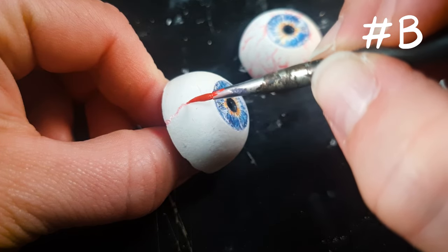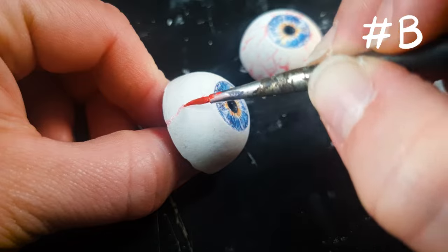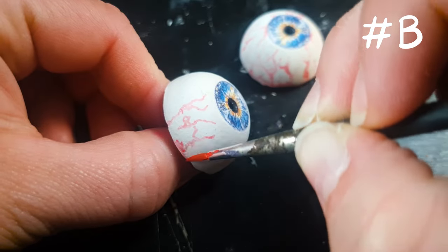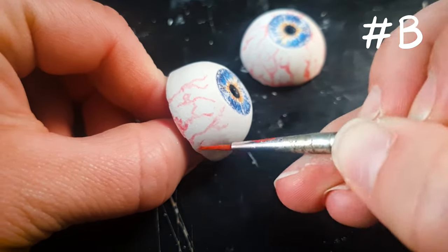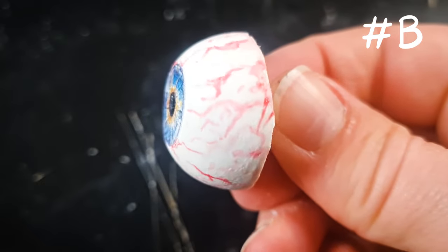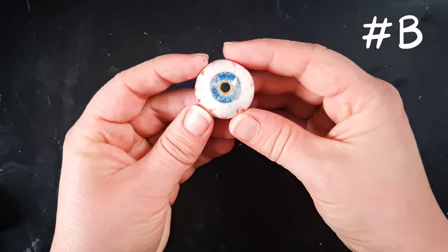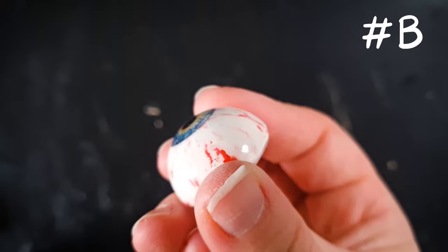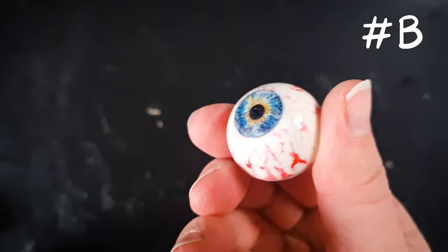Or make a normal eyeball from step one to four and then paint the red on with a watered down acrylic paint before completing step five. This will give a more dominating bloodshot look and this is what the final version will look like.